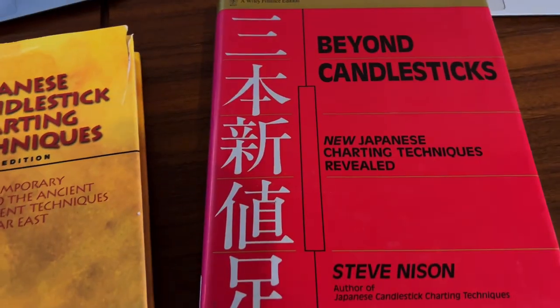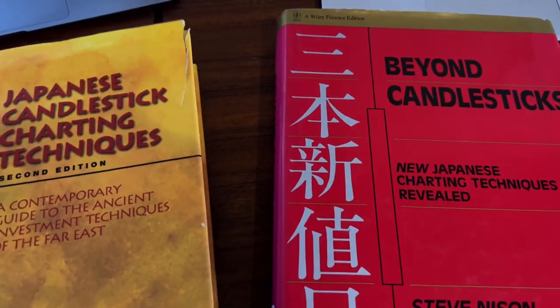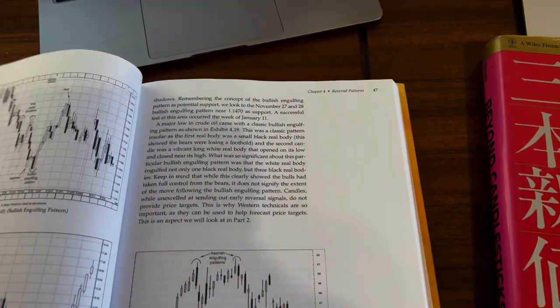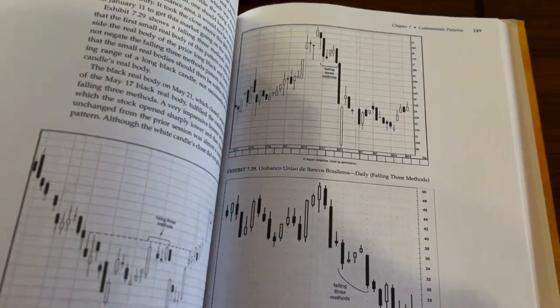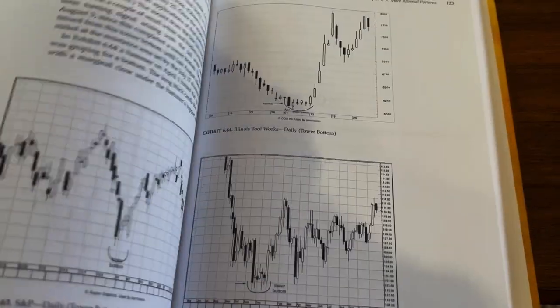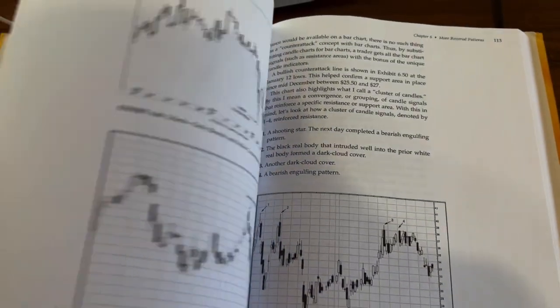Steve Nissen supposedly learned from Japan, and this technique of candlestick charting was learned by rice traders going back 100 or 200 years or more. He spent some time there, learned all these things, and wrote these books 20 years ago. These were some of the first books I ever bought as a trader.